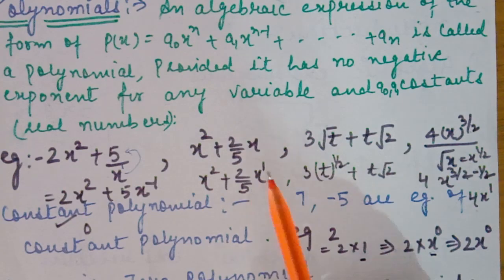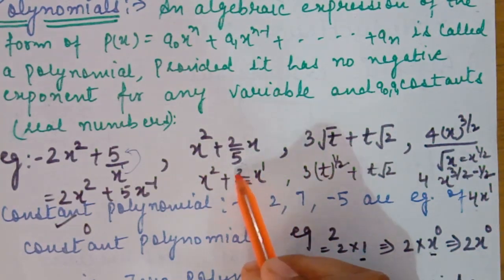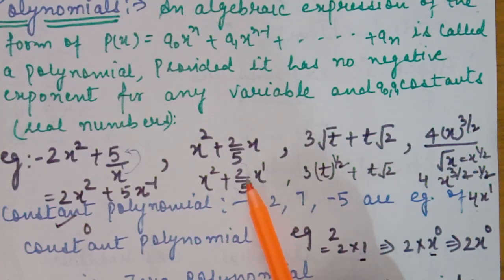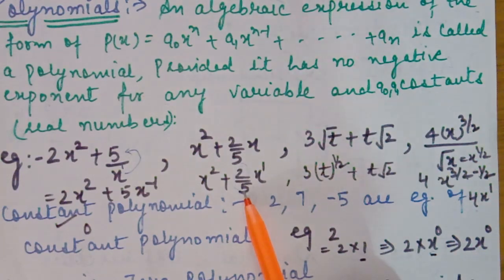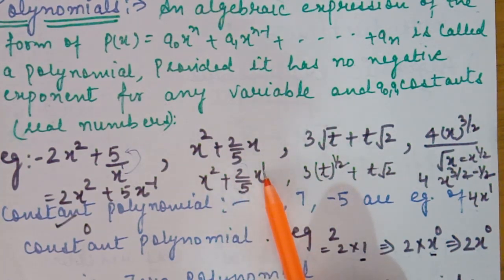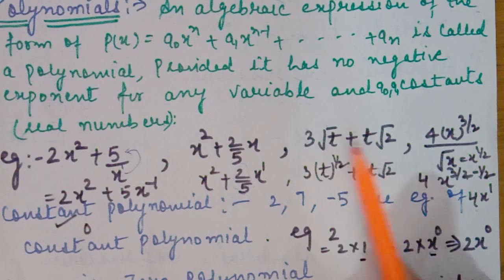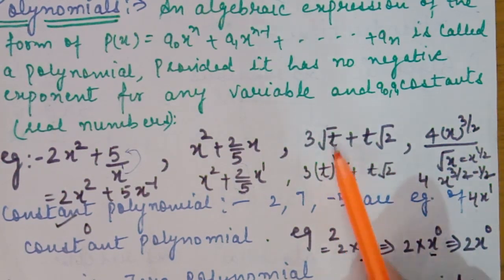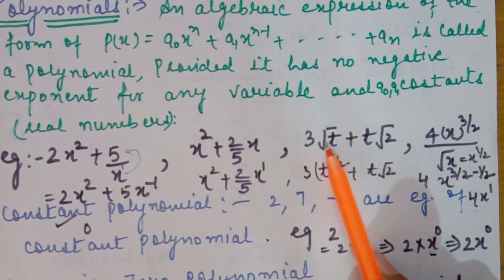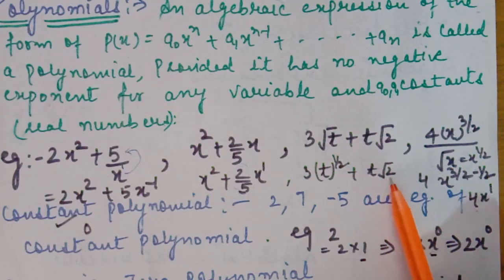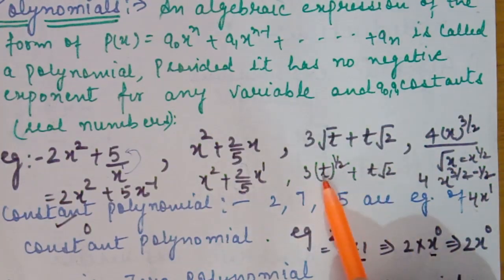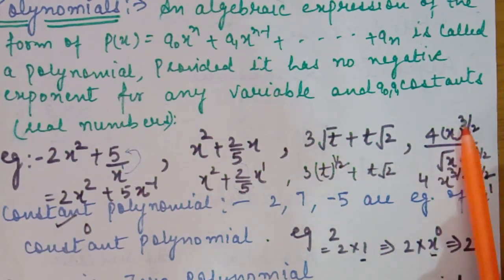Second example: x squared plus 2 upon 5x. This is a polynomial, because having a fraction as a constant coefficient is allowed — real numbers including rational numbers are permitted as coefficients. Only the powers of the variable must be whole numbers. For example, t under root plus t root 2 — when solved, the power of t is one-half, which is a rational number, so this is not a polynomial.